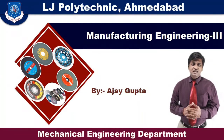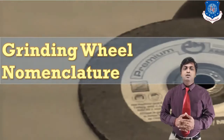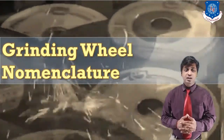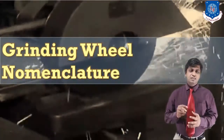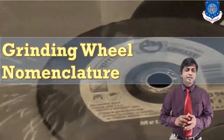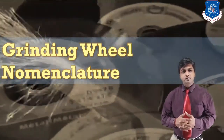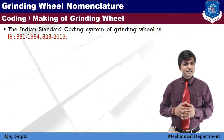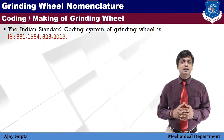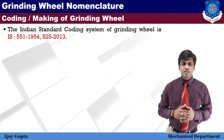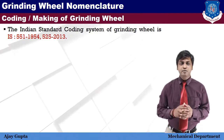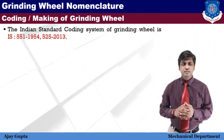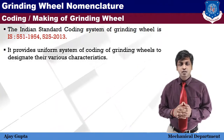Hello students, I am Ajay Gupta from the mechanical engineering department. Today you will learn about an important and interesting topic: grinding wheel nomenclature, also known as specification or marking of the grinding wheel. The Indian standard coding system for grinding wheels is generally IS 515 of 1954 and IS 525 of 2013, which provides a uniform system of coding to designate their various characteristics.